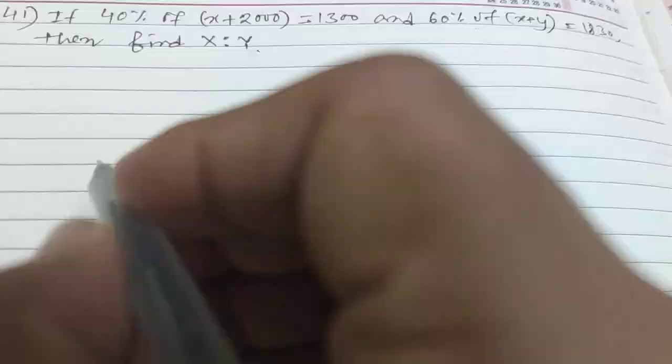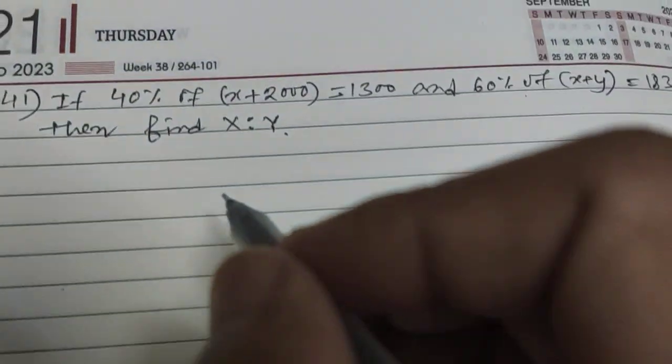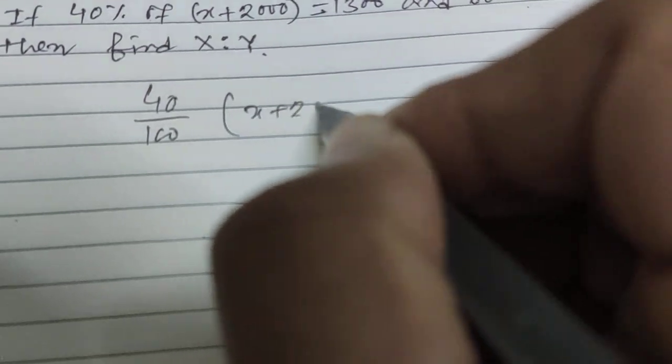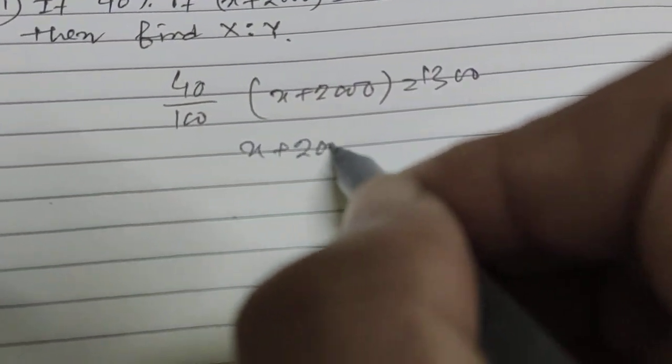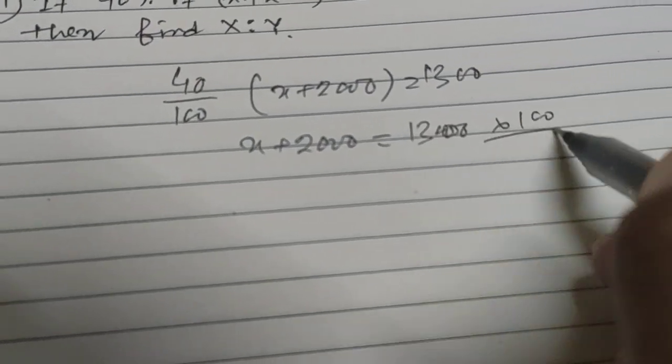40 percent of x plus 2000 equals 1300. So 40 by 100 into x plus 2000 is 1300. Then x plus 2000 equals 1300 into 100 by 40.